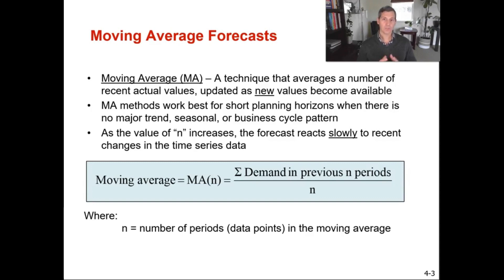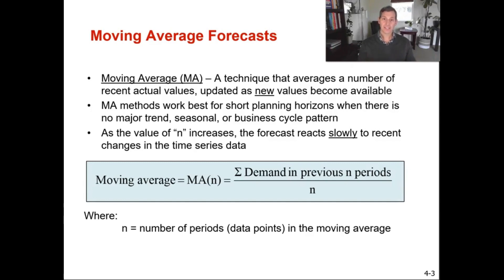It does not respond well to changes. As the value of N — your number of periods — increases, the forecast reacts more slowly to recent changes in the time series data. So as you get more and more data, more time series, more periods, as you start adding that in, your average is going to get diluted, and it's going to react more slowly to the most recent changes in events.